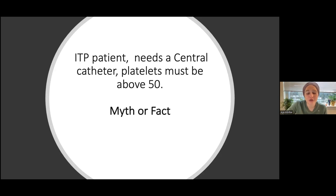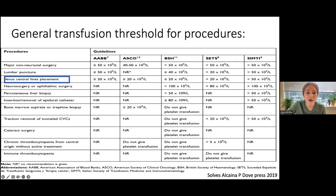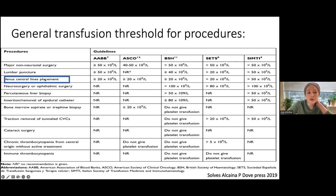79% said myth and 21% said fact — and the truth is this is a myth. Looking at this table of general platelet transfusion thresholds for procedures: for central line placement, most guidelines say more than 20. One guideline says above 50, but with four guidelines saying 20, the threshold of 20 is generally supported.